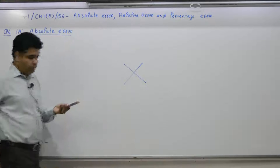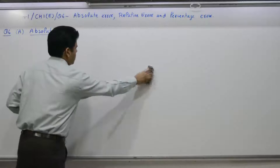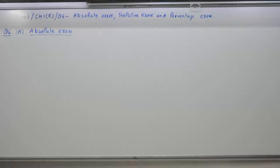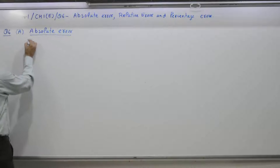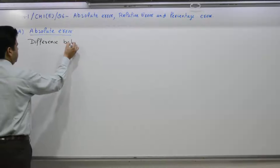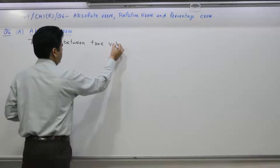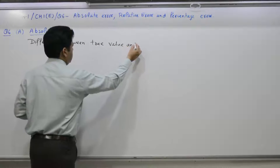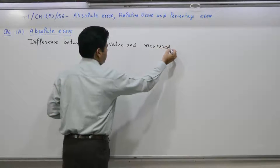First part: what is absolute error? Absolute error in the measurement of a physical quantity is the difference between the true value and the measured value.